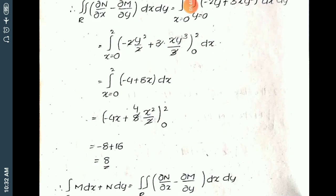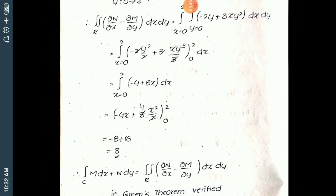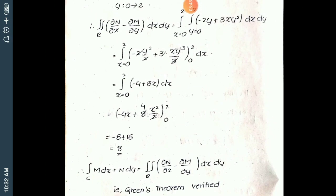Finally, the left side integral over C of M dx + N dy is exactly equal to the right side double integral over R of (∂N/∂x − ∂M/∂y) dx dy. Therefore, Green's theorem is verified. Remember: for verification problems, you individually calculate the integrals and verify that both are equal.